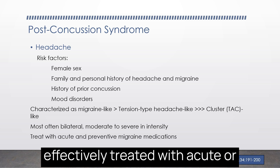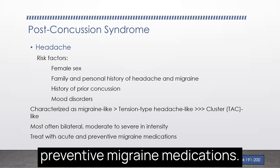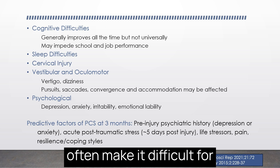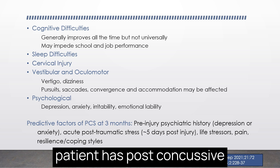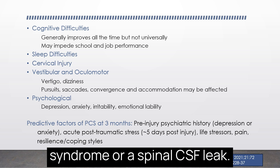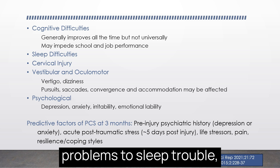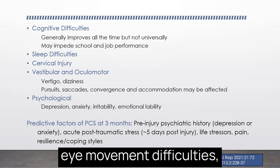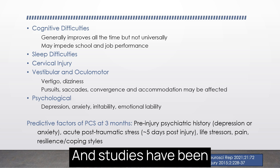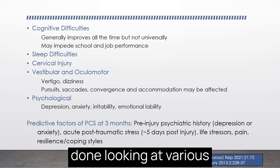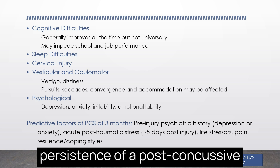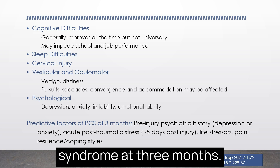The pain is usually on both sides of the head, moderate to severe in intensity, and it can be effectively treated with acute or preventive migraine medications. Other symptoms that can occur after a concussion — cognitive problems, sleep trouble, neck pain, dizziness, vertigo, eye movement difficulties, and psychological issues — often make it difficult to sort out whether the patient has post-concussive syndrome or a spinal CSF leak.